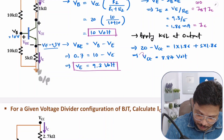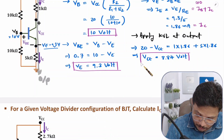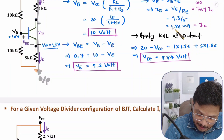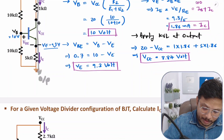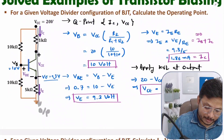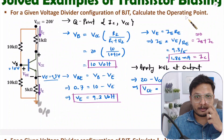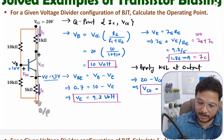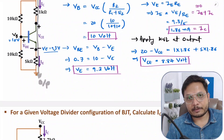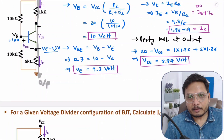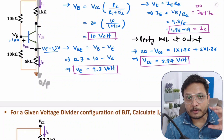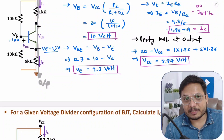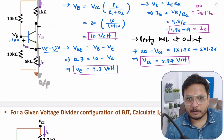Now we have VCE and IC — that is the operating point of this circuit. That is how simply we can solve the question, without converting the circuit in terms of Thevenin's equivalent circuit.